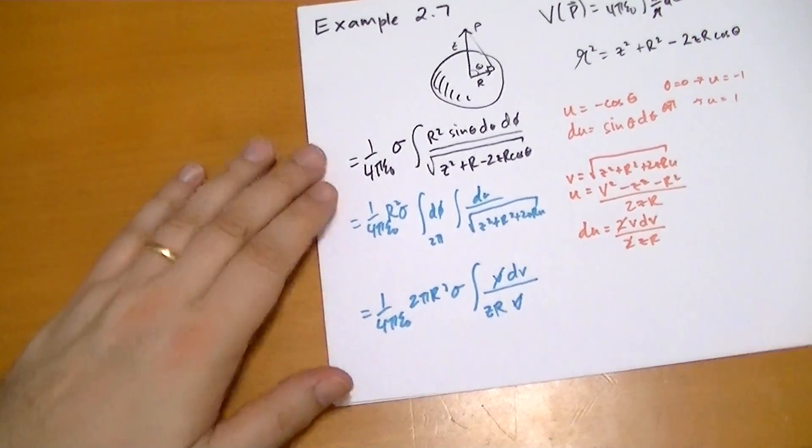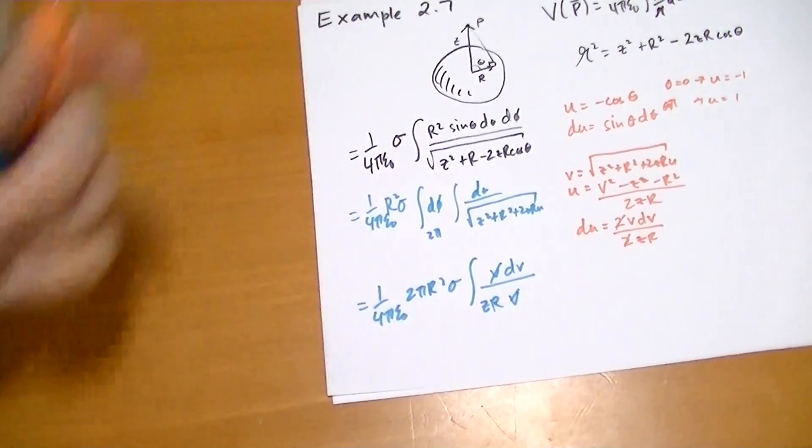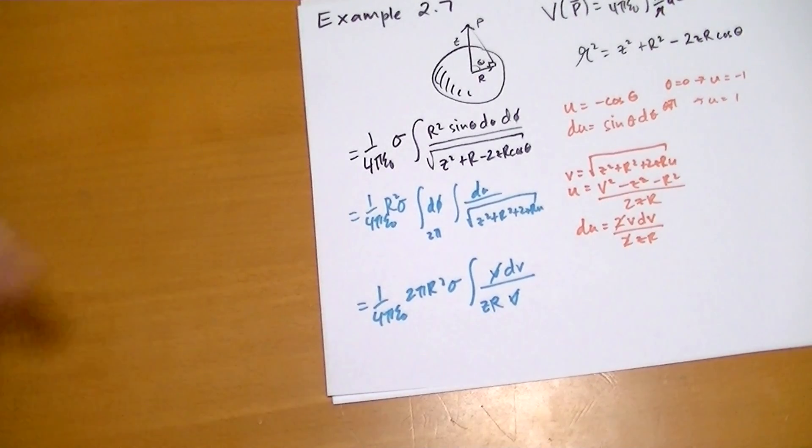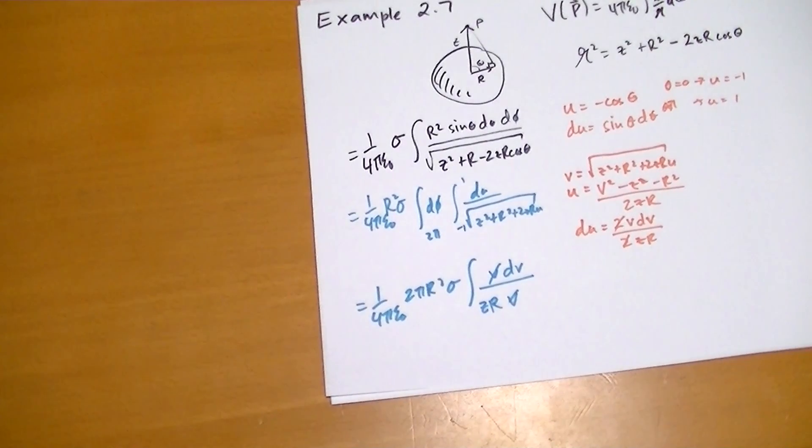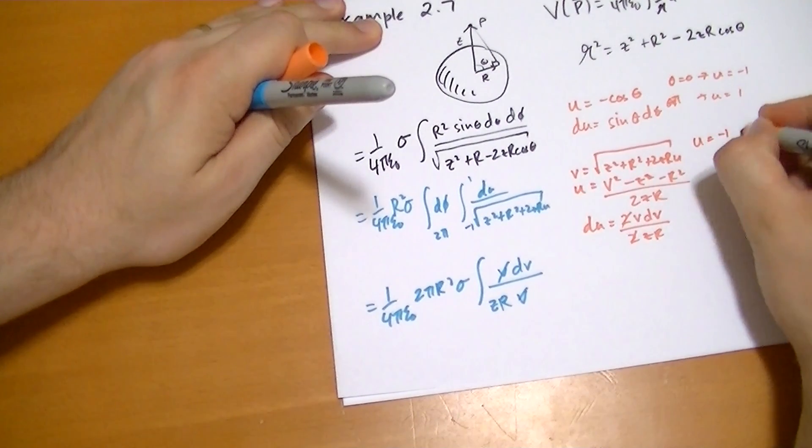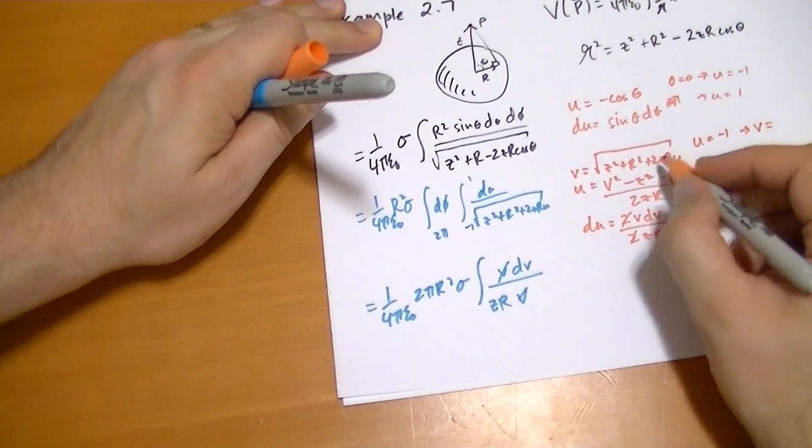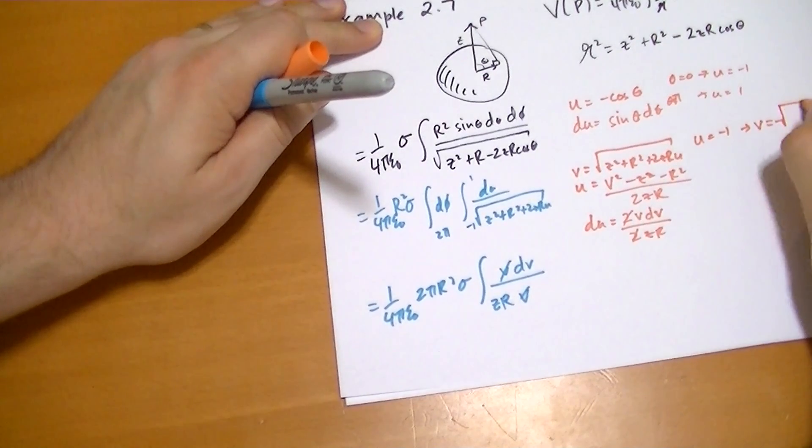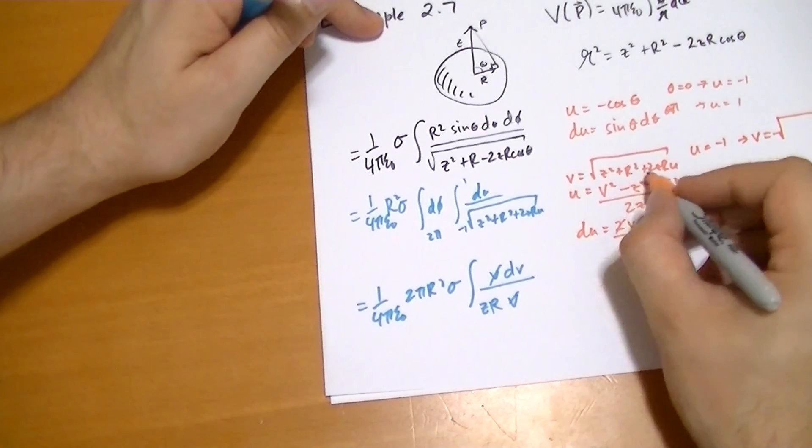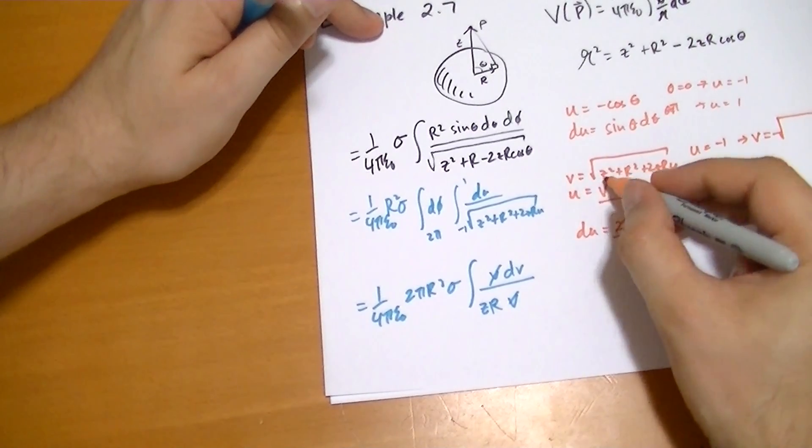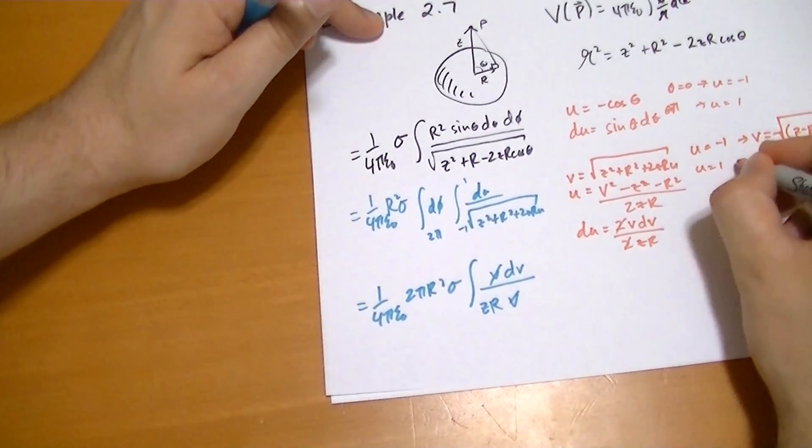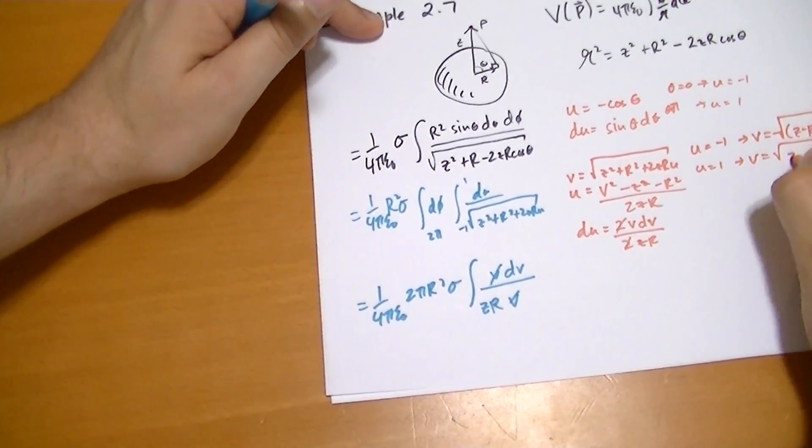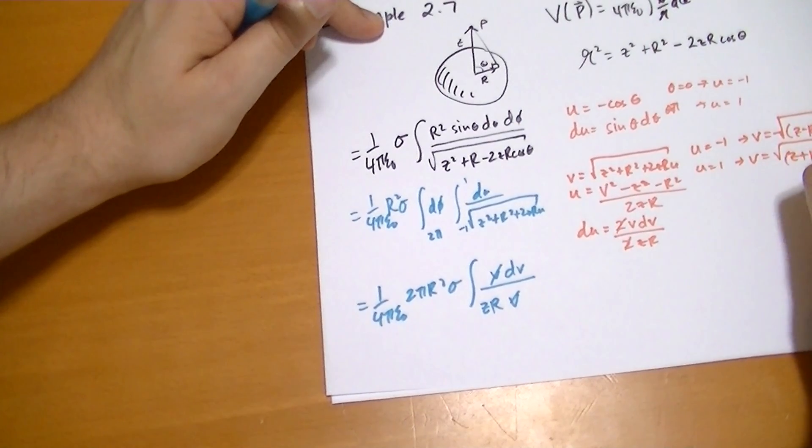And we have to figure out the boundary conditions. So when u is minus 1, this is minus 1 to 1. When u equals minus 1, then v is equal to the square root of z squared plus r squared minus 2 z r, which you'll recognize is just z minus r squared. And when u is equal to 1, then v is equal to the square root of z plus r squared.